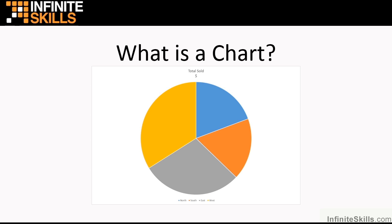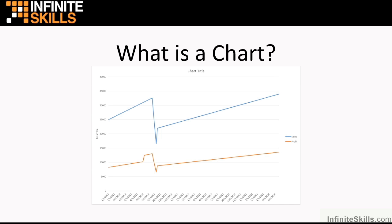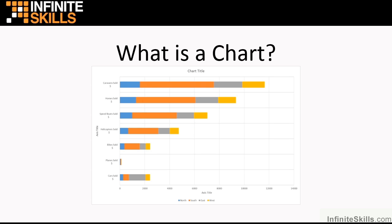Firstly, it's useful to discuss: what actually is a chart? Is it just something that's pretty and colorful that appears in Excel — like this little example here with lots of colored slices, very bright and cheerful? Or is it more lines drawn from left to right showing sales data? Or is it column-type things with lots of colors that no one seems to know what they mean? Well, actually it's all of those things.